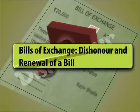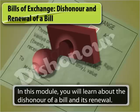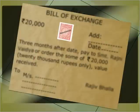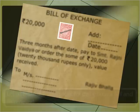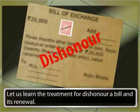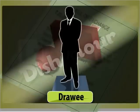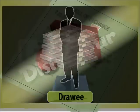Bills of Exchange: Dishonor and Renewal of a Bill. In this module, you will learn about the procedure of dishonor of a bill and its renewal. You may already know the meaning of bills of exchange and its accounting treatment. Now let us learn the treatment for dishonor of a bill and its renewal. If a drawee refuses to make payment or fails to make payment on the due date, it is called dishonoring of a bill due to non-payment.